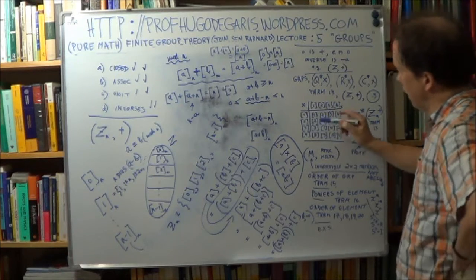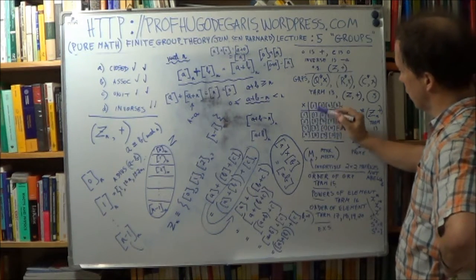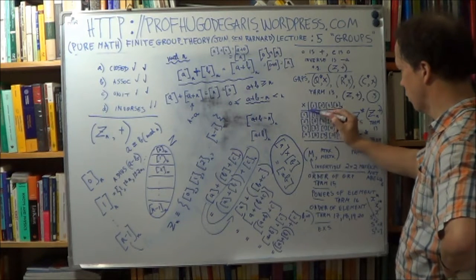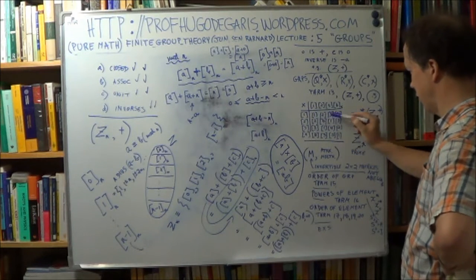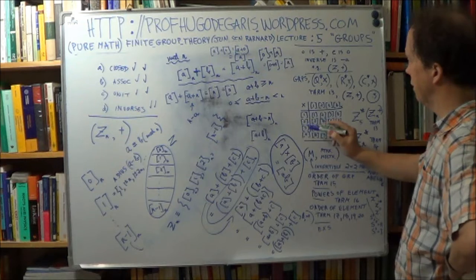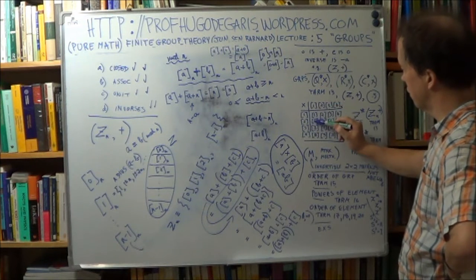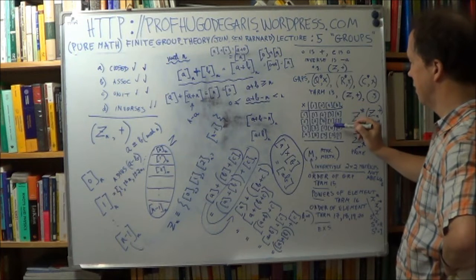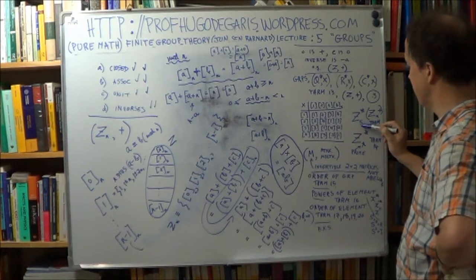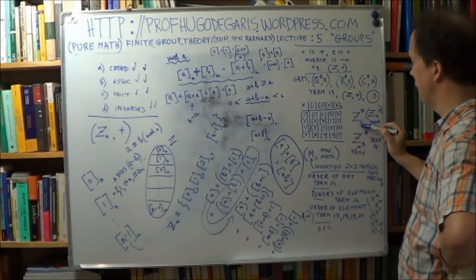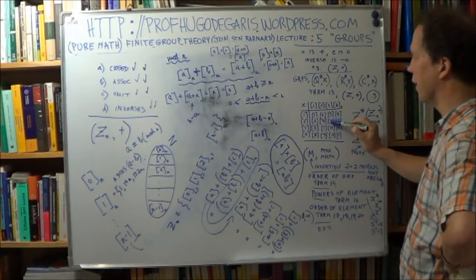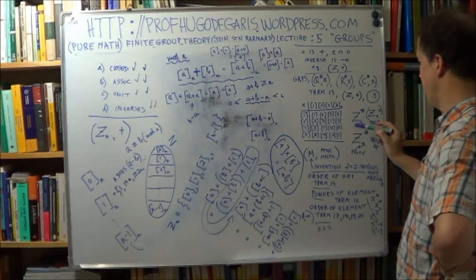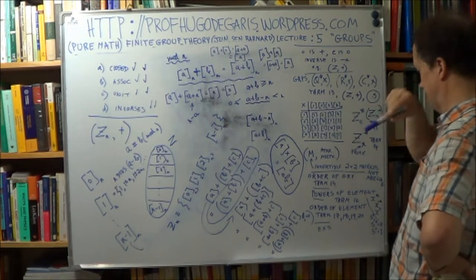All right, well let's just do a few. So 1, 1, 1, so that's 1, so that's obvious. 1, 2. So you're multiplying this 1 by all these, so that should just be the same as that. Now about 2. So 2 times 1, that will give you 2. 2, 2 is 4. 2, 3 is 6. Now that's over, over 5, that's over n. So subtract n. So 6 minus 5 will give you 1. So that's a 1. 2, 4 is 8, minus 5, that's 3, and so on.